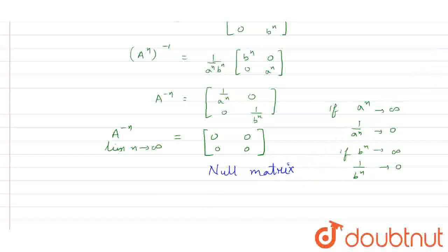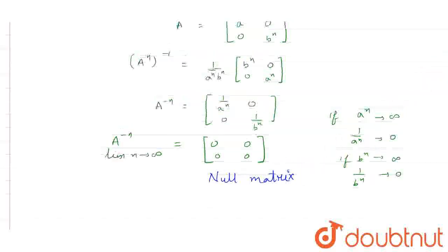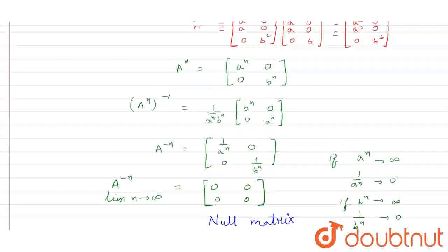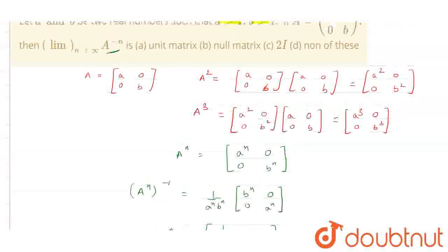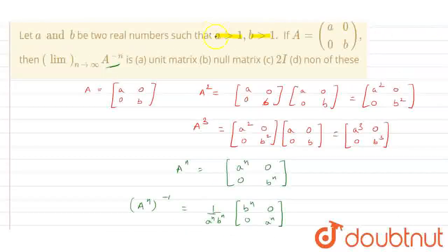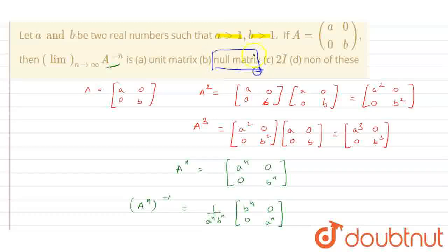Let us check which option matches our answer. Option B is the correct answer — we will be getting the null matrix. This is the correct answer.